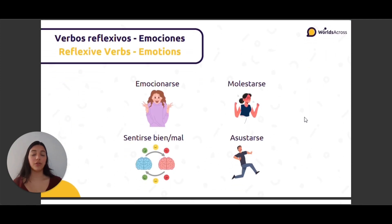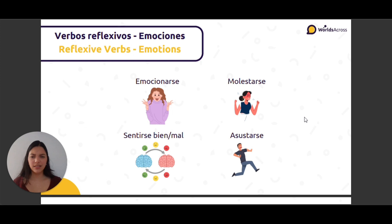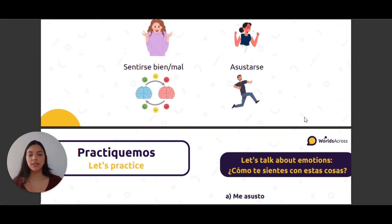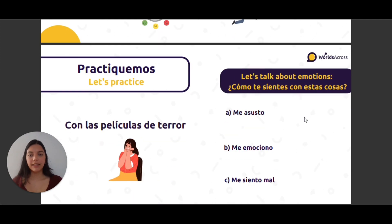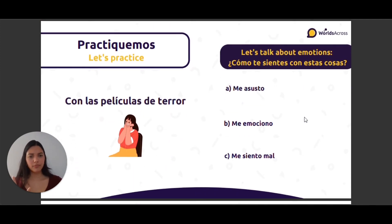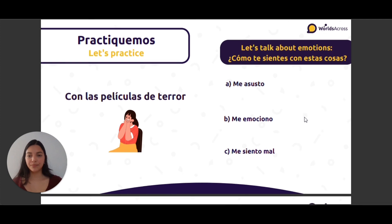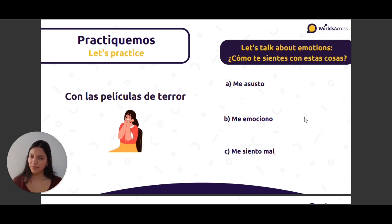We also have reflexive verbs for emotions, verbos reflexivos de emociones: emocionarse, molestarse, sentirse bien, sentirse mal, asustarse — 'I get scared'. Let's practice: ¿Cómo te sientes con estas cosas? Con las películas de terror — me asusto, me emociono, o me siento mal. I will say me asusto — it makes me scared.